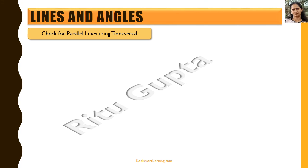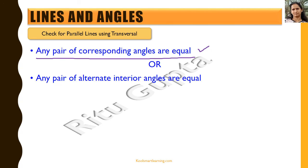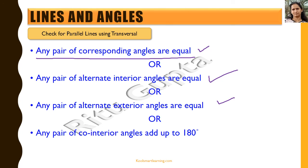So friends, let's see the different checks to find out that lines are parallel using a transversal. If any pair of corresponding angles are equal, we say the lines are parallel. If any pair of alternate interior angles are equal, we also say the lines are parallel. And if any pair of co-interior angles add up to 180 degrees, we also say the lines are parallel. So if two lines are intersected by a transversal and any one of these conditions is met, then the given two lines are parallel to each other.